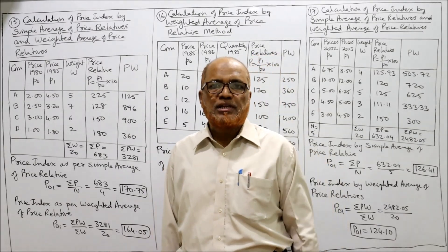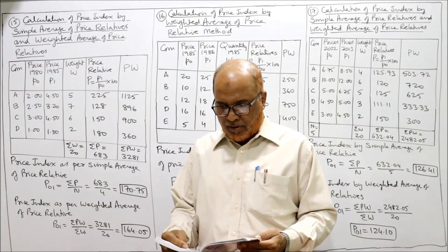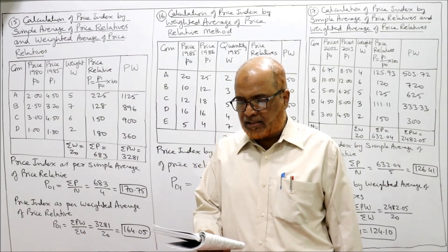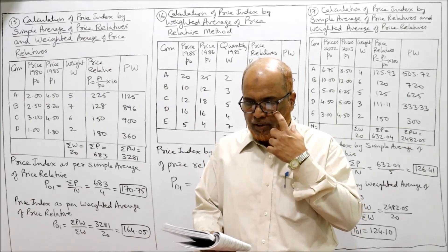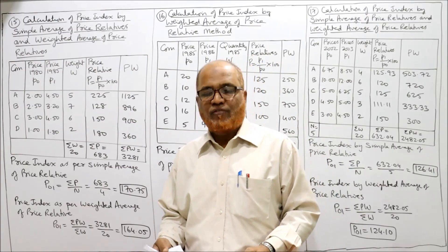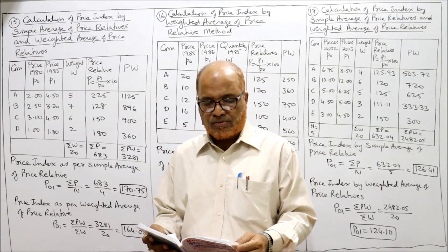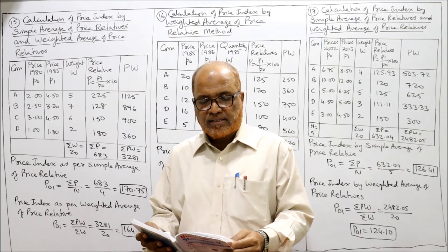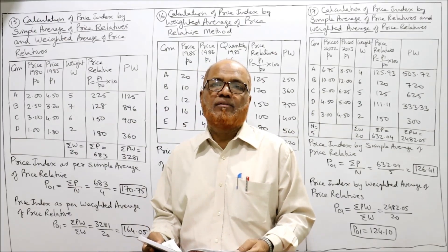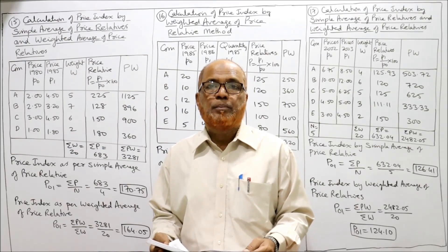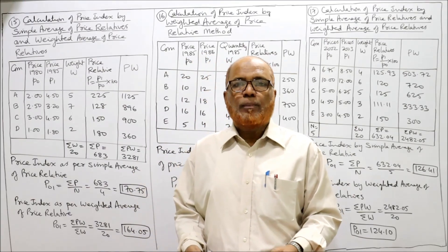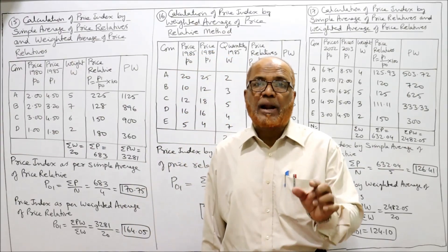So far we have completed 14 problems. Now we are on the 15th problem. The price quotations of 4 different commodities for 1980 and 1985 are given. Calculate the index number for 1985 with 1980 as base, using simple average of price relatives and weighted average of price relatives. Commodities ABCD, weights are given as 5, 7, 6, 2. The 1980 prices are the base year P0 and the 1985 prices are the current year price P1, and weights are given.